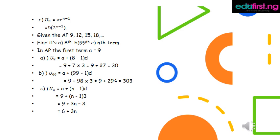For the nth term of this AP: u_n equals a plus (n minus 1) times d equals 9 plus (n minus 1) times 3, which gives 9 plus 3n minus 3, equals 3n plus 6.